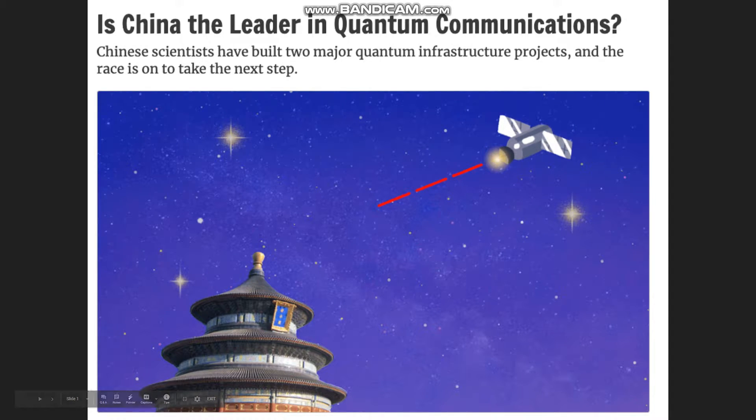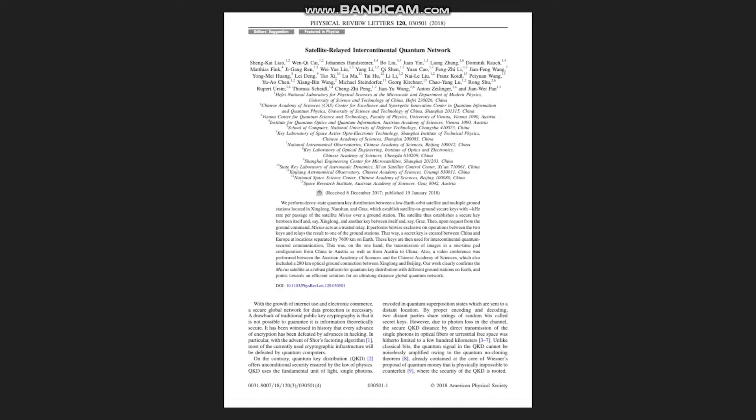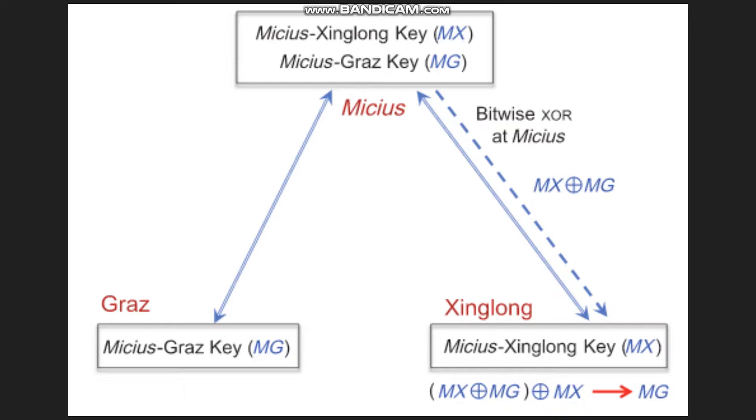We will address these questions in order. In Dr. Penn's 2017 paper, Satellite Relay Intercontinental Quantum Network, Dr. Penn says that in the process of quantum key distribution, Micius acts as a trusted relay upon request from the ground command, performing bitwise exclusive or operations between the two keys and relaying the results to one of the ground stations.